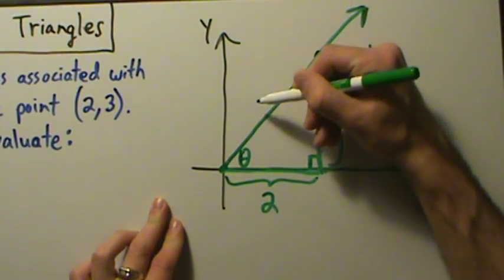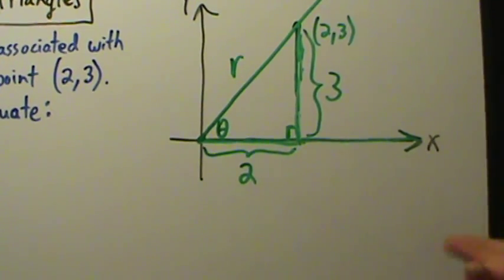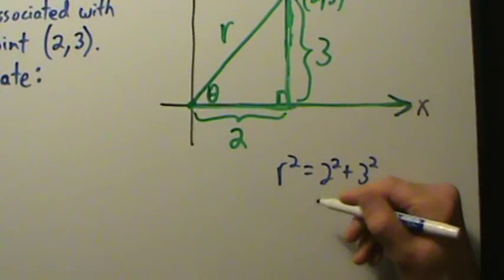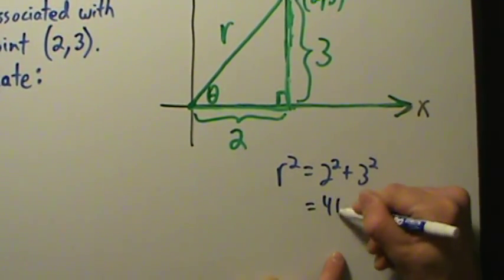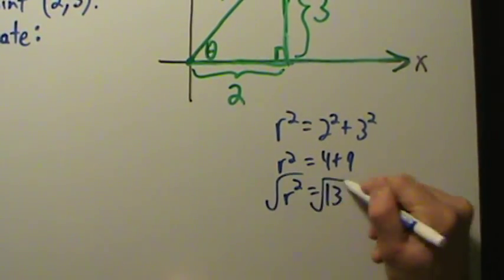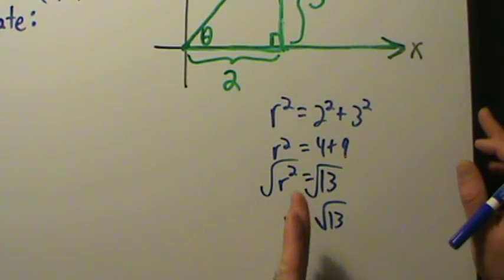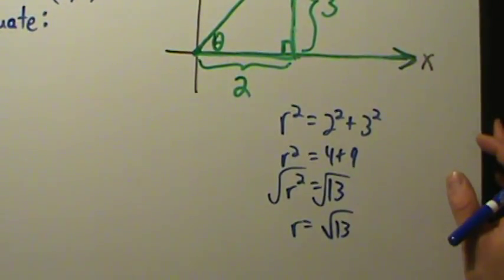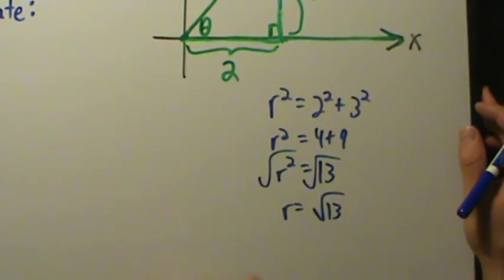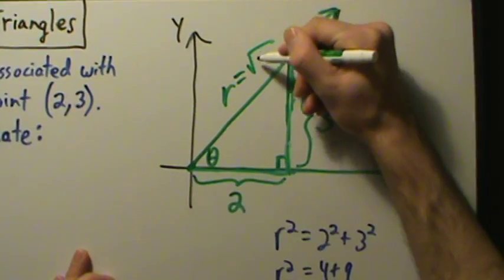Now that we have those two sides, we can find the hypotenuse. Let's call it R. Using the Pythagorean theorem: R squared equals 2 squared plus 3 squared, which is 4 plus 9, so R squared equals 13. Taking the square root of both sides, R equals the square root of 13. When dealing with the hypotenuse, we keep R positive since we're talking about the length of a side of a triangle.